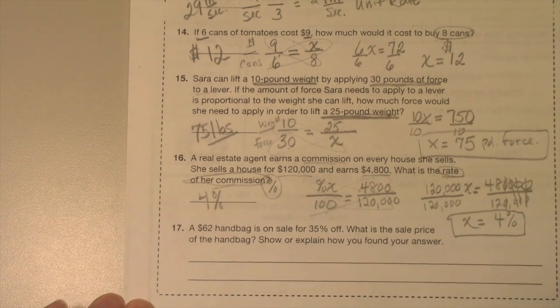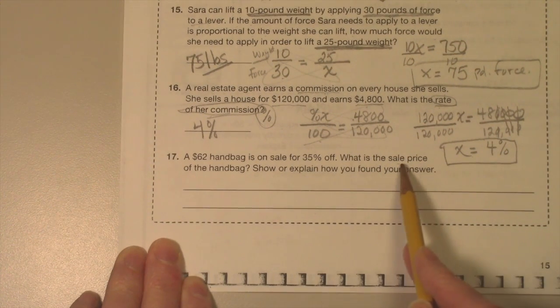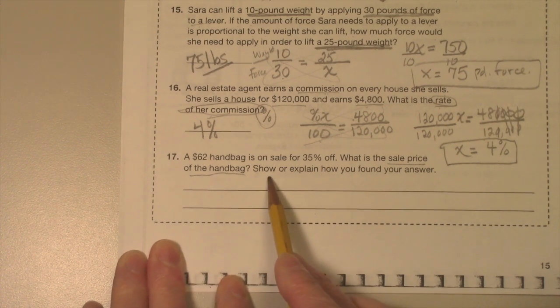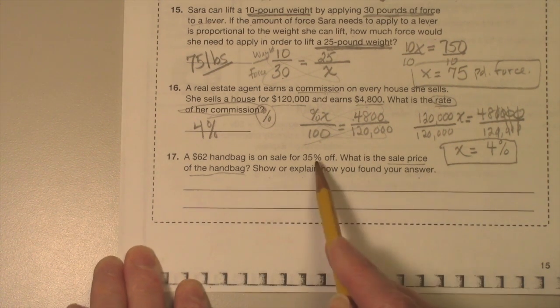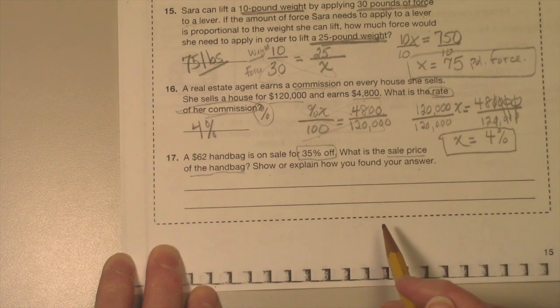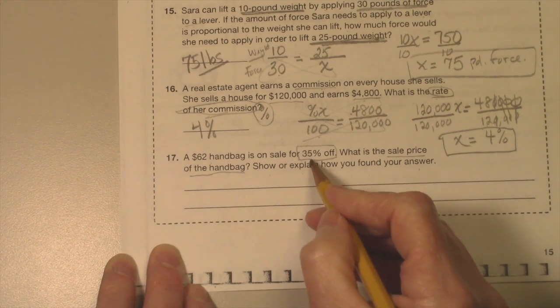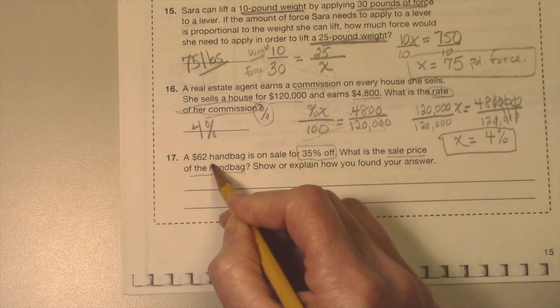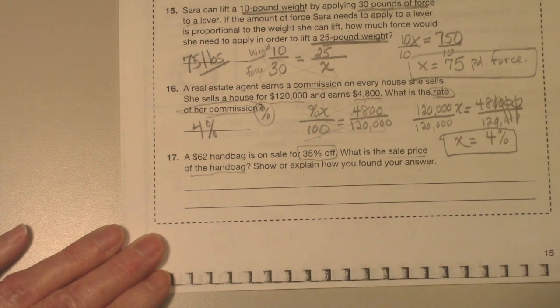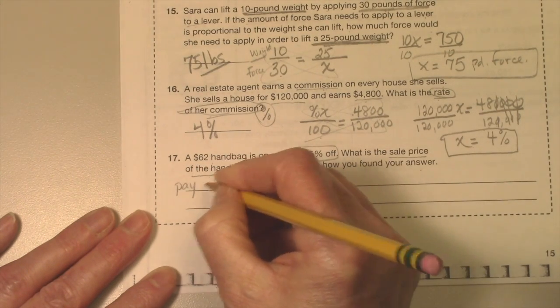All righty. A $62 handbag is on sale for 35% off. What is the sale price of the handbag? Show or explain how you found your answer. 35% off of the $62 handbag. Okay, so there's a couple ways of doing this. We want to know what 35% of the $62 is, and that's what you will subtract from the original price to get the sale price. Or a smart way of doing it is instead of paying 100% of the price of the bag, 100, take away 35%. 100 minus 35 means you're paying—so you're going to pay 65% of the price.